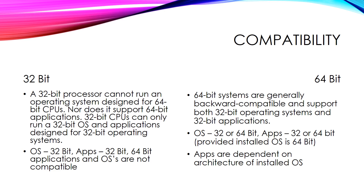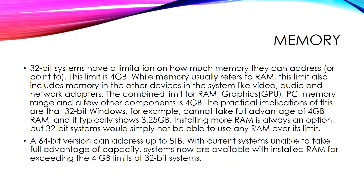In 64-bit you can run both 32-bit and 64-bit operating systems, but 32-bit systems have a limitation on how much memory they can address — this limit is 4 GB. While memory usually refers to RAM, this limit also includes memory in other devices such as video, audio, and network adapters. The combined limit for RAM, GPU, PCI memory, and other components is 4 GB.